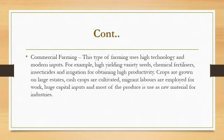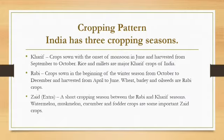Cropping patterns: India has three cropping seasons. First, Kharif crop — sown with the onset of monsoon in June and harvested from September to October; rice and millets are major Kharif crops. Rabi crop — sown at the beginning of the winter season from October to December and harvested from April to June; wheat, barley, and oil seeds are Rabi crops. Zayed — an extra, short cropping season between Rabi and Kharif; watermelons, muskmelons, cucumber, and fodder crops are important Zayed crops. Fodder crops are harvested for feeding cattle or domesticated animals.